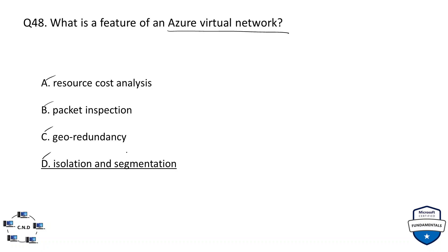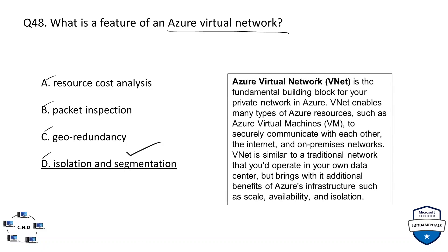Azure Virtual Network is the fundamental building block of your private network in Azure. A VNet enables Azure resources such as virtual machines to securely communicate with each other, the internet, and on-premises networks. It is similar to a traditional network in your own data center but brings additional benefits of Azure infrastructure such as scale, availability, and isolation.